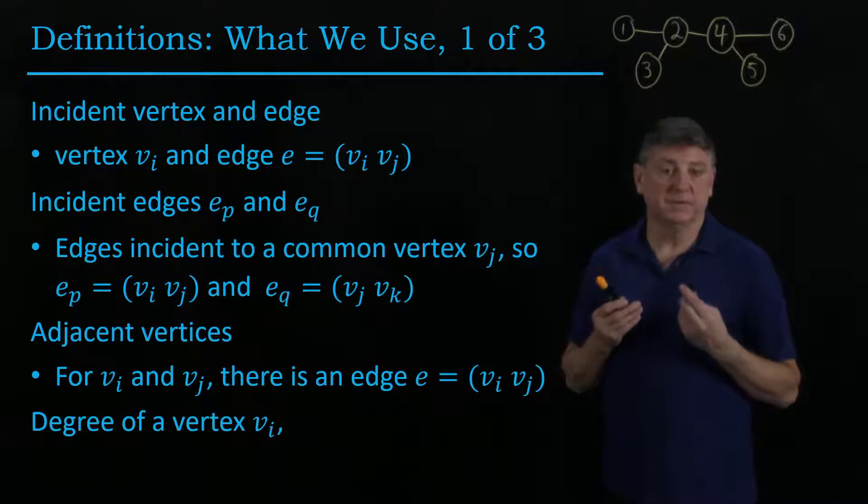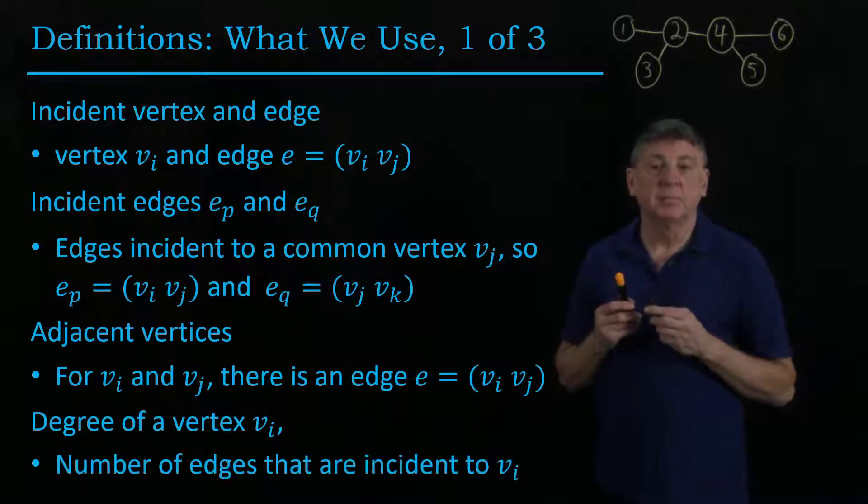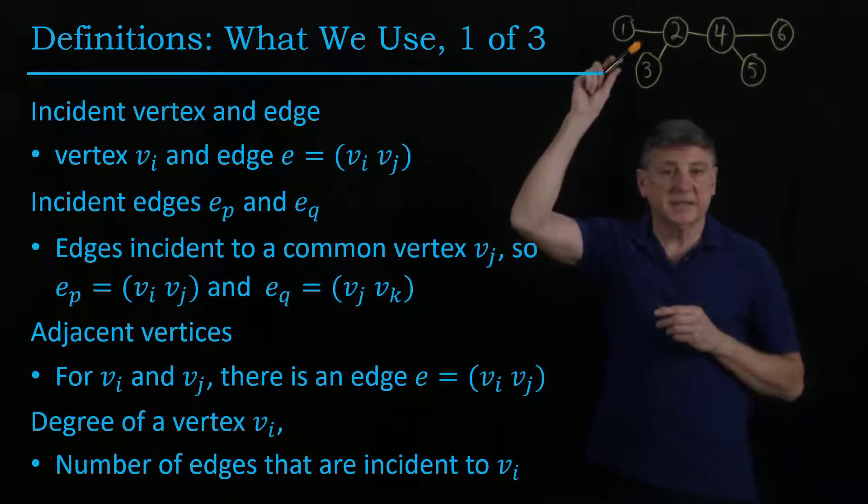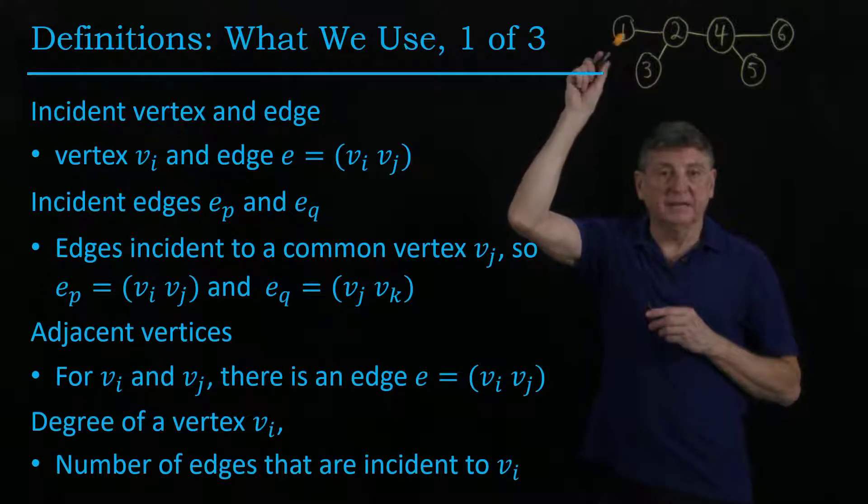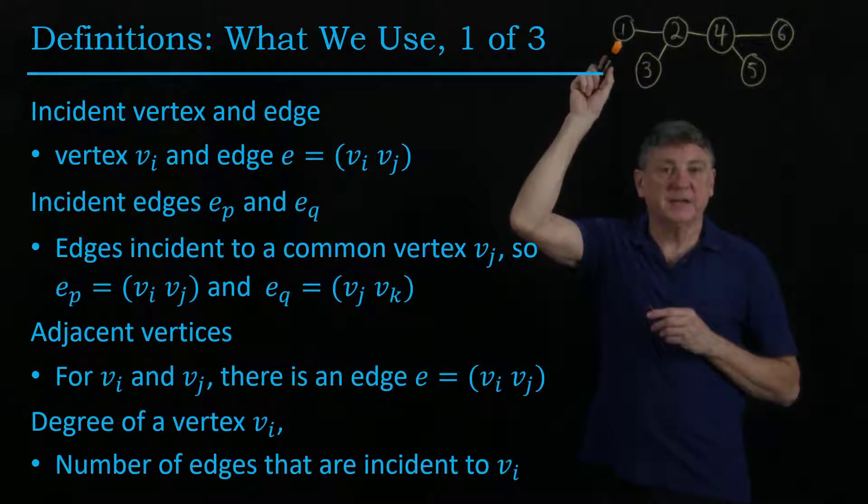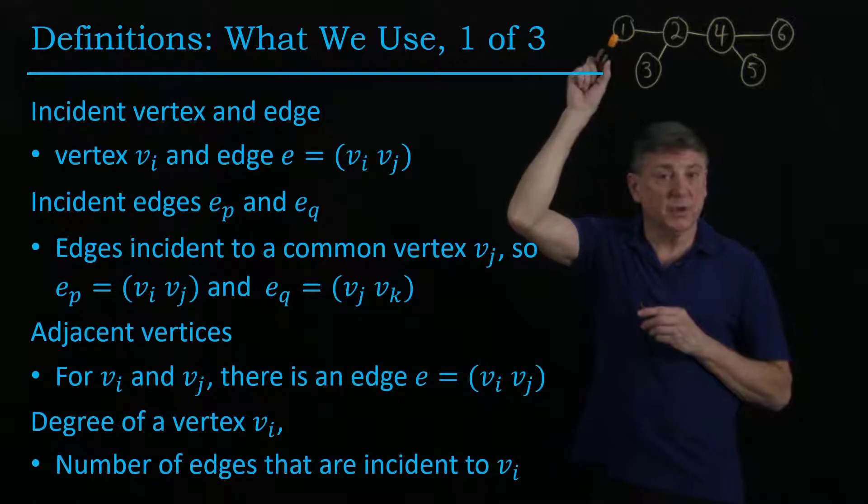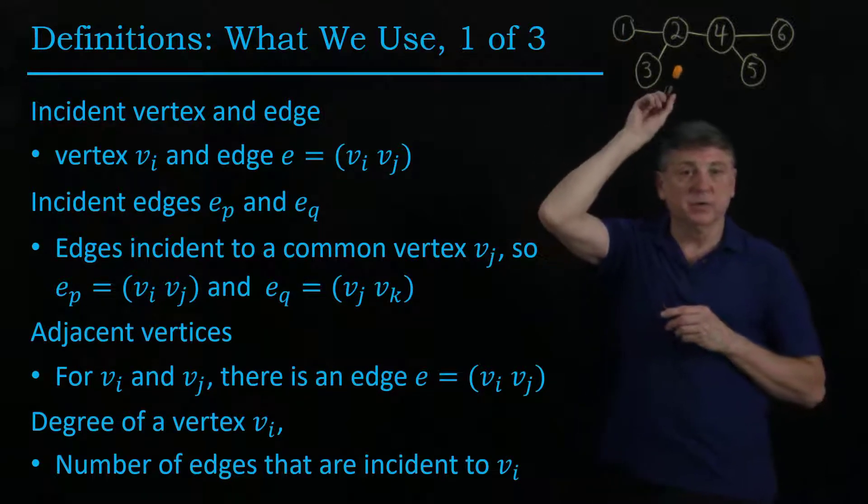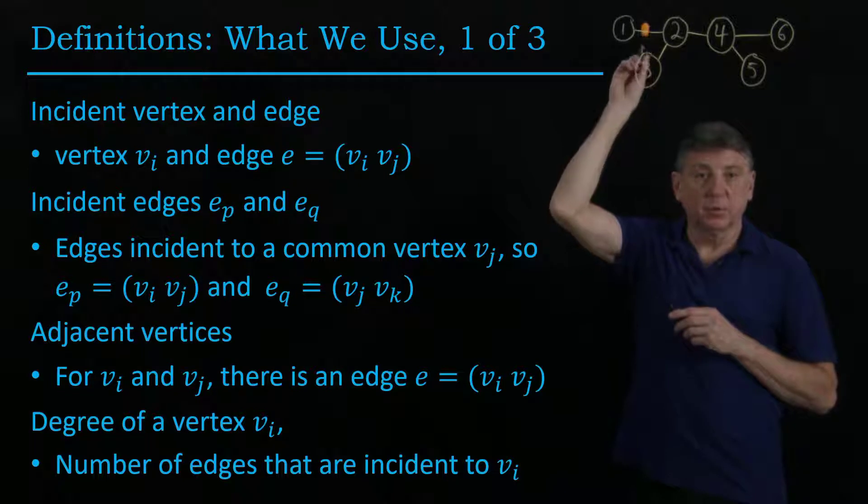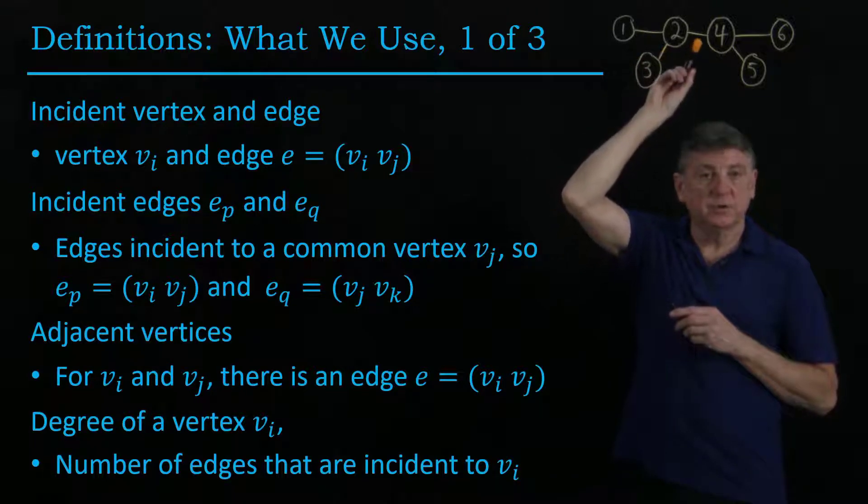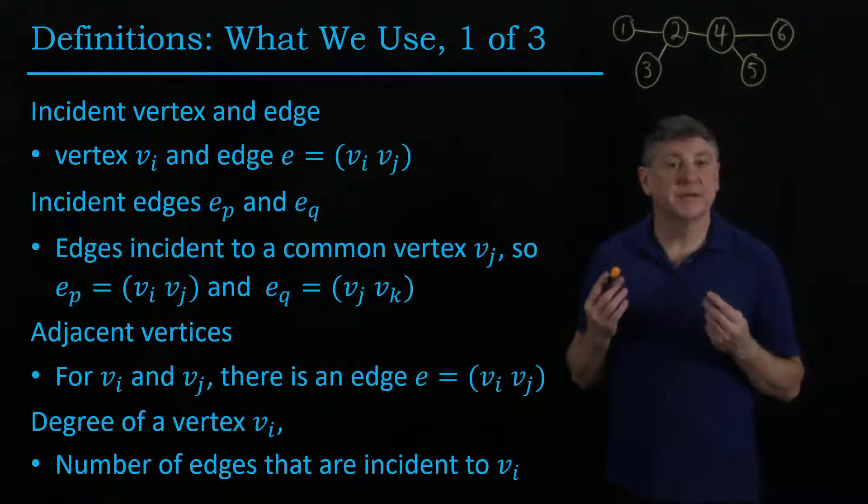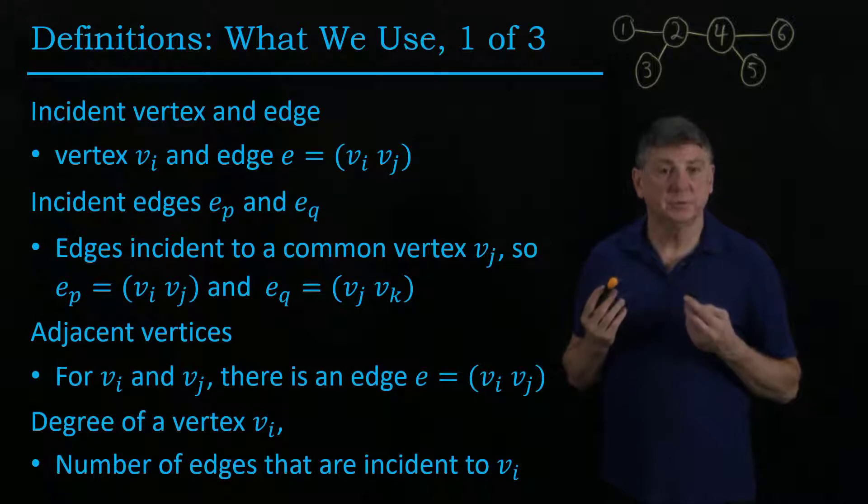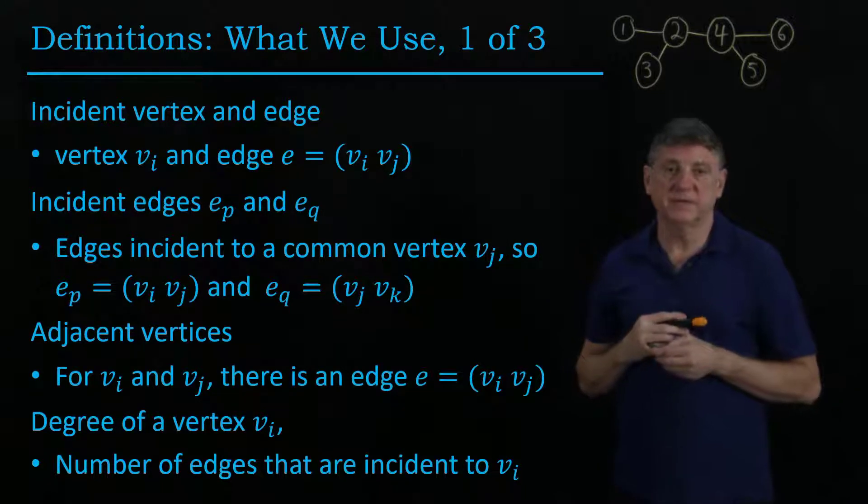So the degree of a vertex is the number of edges that are incident to it. Let's take this example. Here, the degree of vertex one is one because there's only one edge that connects it. When we go to vertex two, there are one, two, three edges. So vertex two is of degree three, and so on for the rest of this example graph.